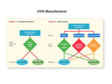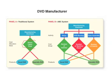Let's look at a simple DVD manufacturing company. We have Panel A, which is a traditional costing system, and Panel B, which is an activity based costing system. In Panel A, we start with manufacturing overhead and we want to allocate this overhead to our products. We have picked direct labor cost as our allocation base and we're using it to allocate all of our manufacturing overhead to our Excel DVDs and our specialty DVDs.